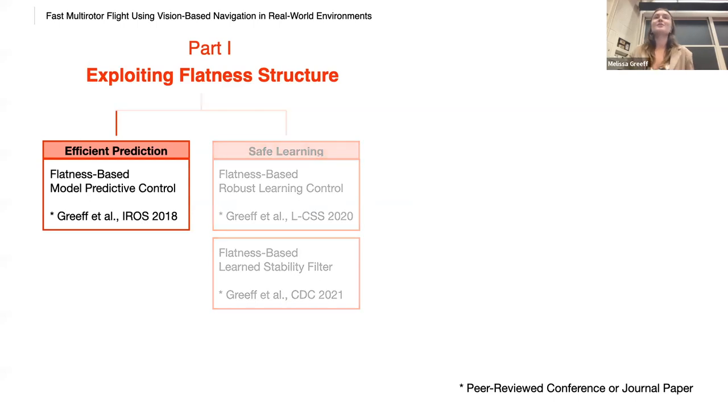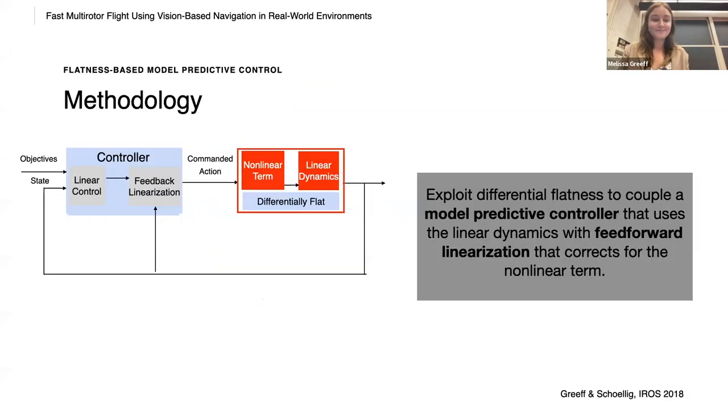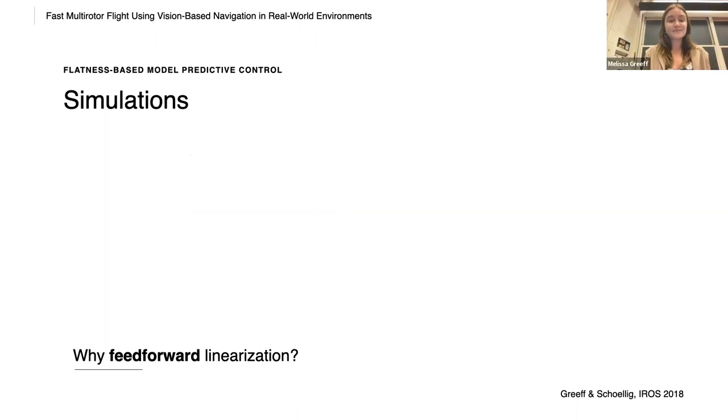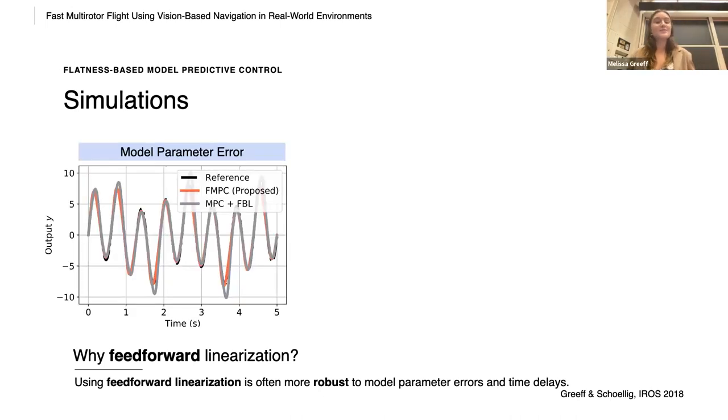So I'll start with flatness-based model predictive control. In the proposed flatness-based model predictive control, we exploit differential flatness to couple a model predictive controller that uses the linear dynamics with feed-forward linearization that corrects for the nonlinear term. So why feed-forward linearization as opposed to the more standard feedback linearization? Well, using feed-forward linearization is often more robust to model parameter errors and time delays.